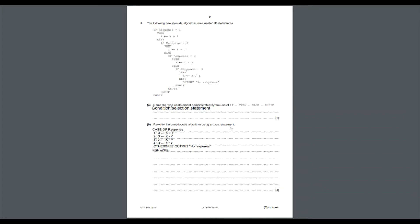Next we have to rewrite the pseudocode using a CASE statement. A CASE statement is like an IF statement but condenses all the nested IFs into one statement: CASE OF response, 1: x ← x + y, 2: x ← x - y, and so on for 3 and 4. If the response was not 1, 2, 3, or 4, OTHERWISE OUTPUT 'no response'. End with ENDCASE.